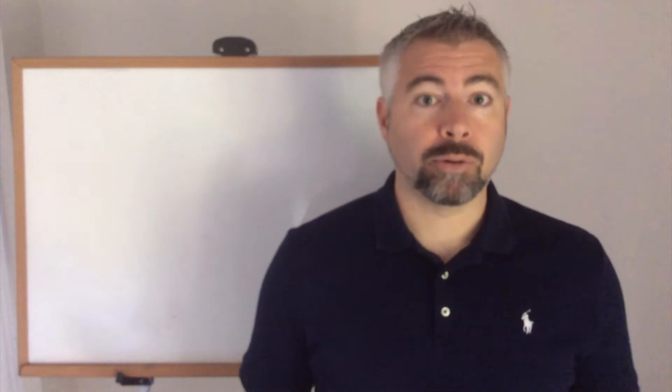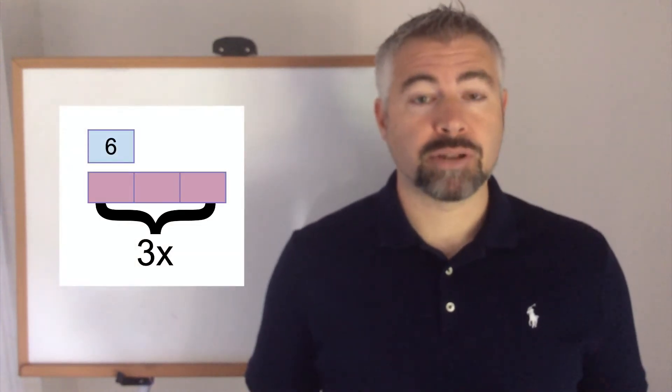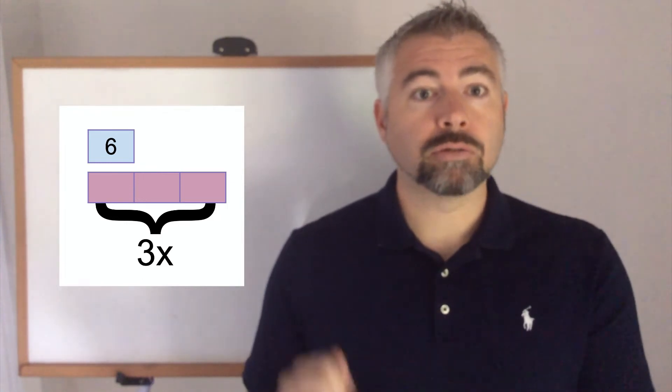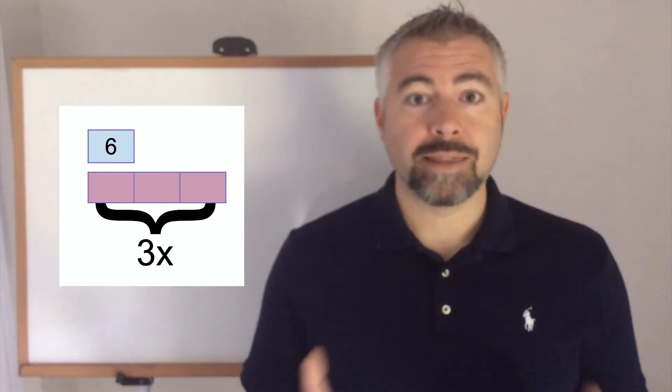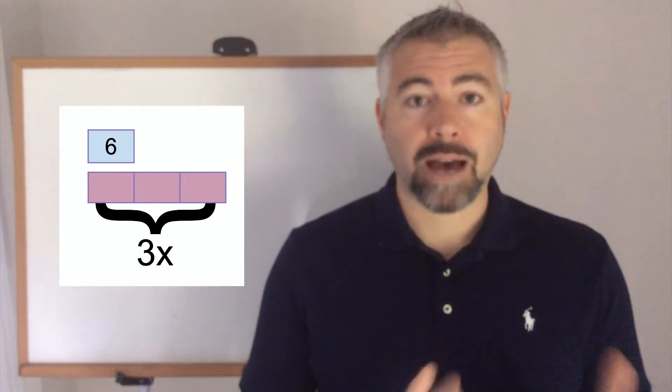For this reason, bar models are often a useful strategy for representing multiplicative comparison because you can have one segment represent a certain group and then show another group that's that many times bigger or half as big and so on.